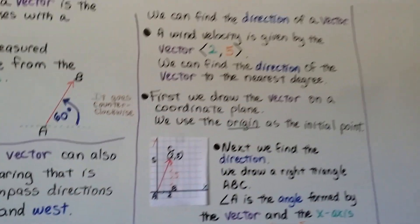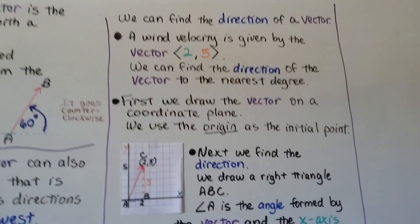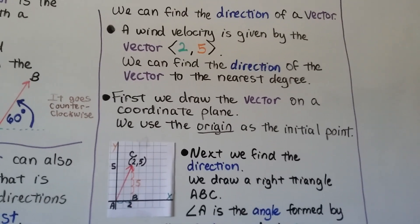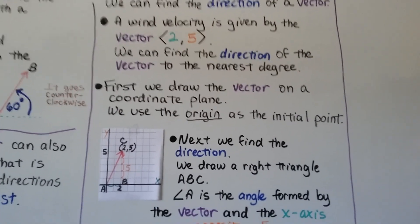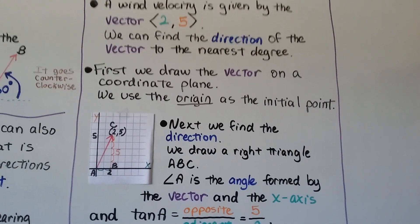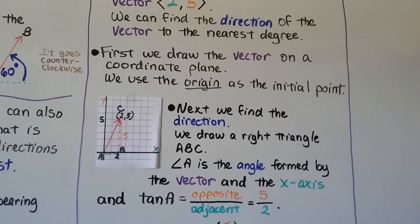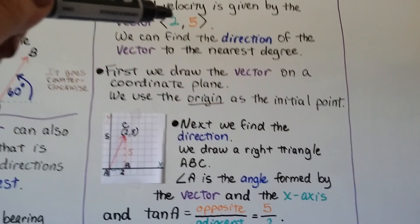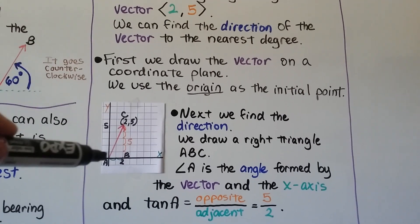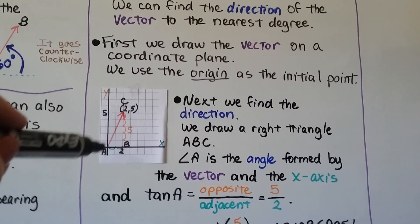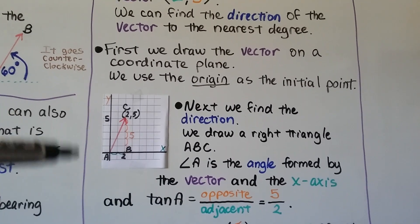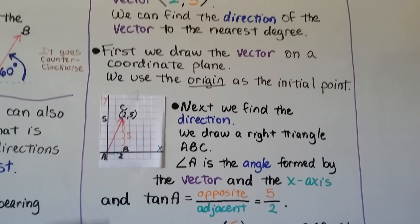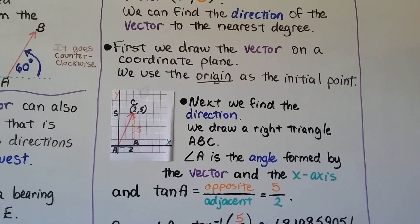And we can find the direction of a vector. A wind velocity is given by the vector 2, 5. We can find the direction of the vector to the nearest degree. First, we draw the vector on a coordinate plane. So it's got a terminal point of 2, 5. So we draw that here. We know it starts at the origin. That's our initial point.